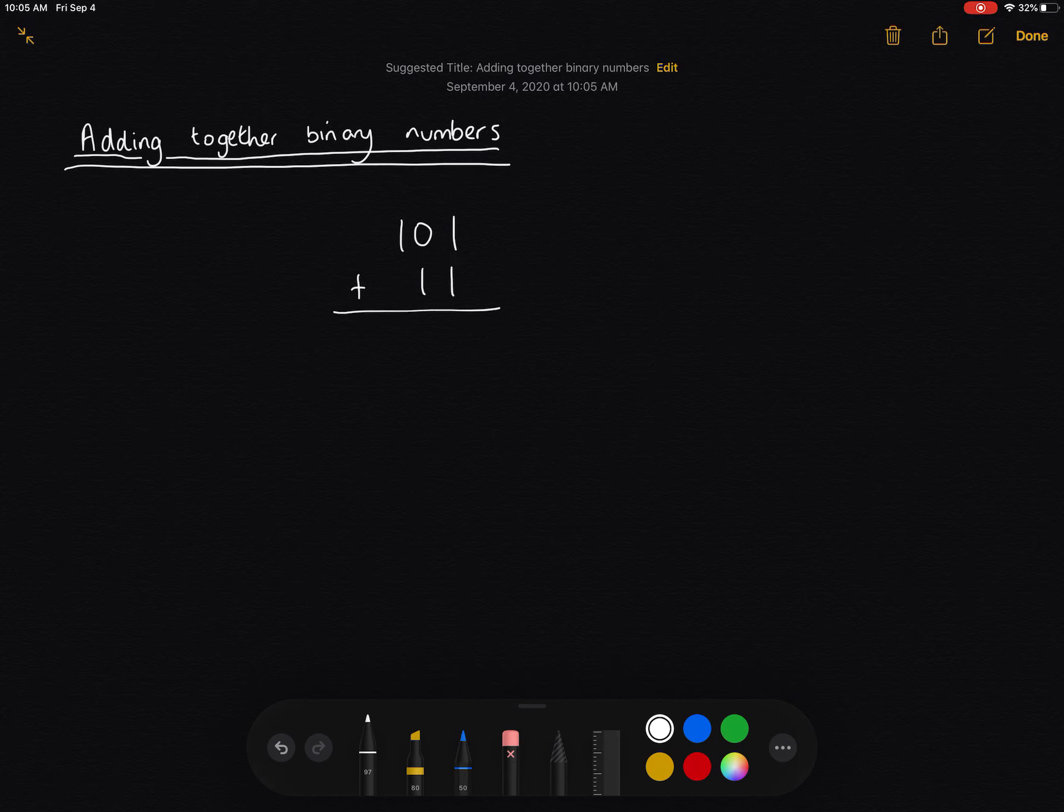Alright, so what I'm going to do is I want to add together these two binary numbers. Alright, now before we start, I just want to have a little bit of a think. So if we do 0 plus 0, if we just add together two bits, and both of those bits are 0, we're going to obviously get 0.